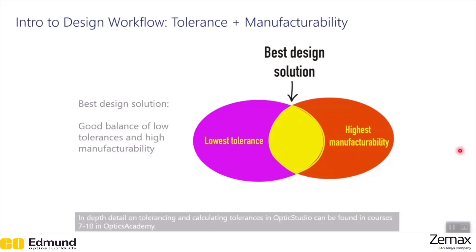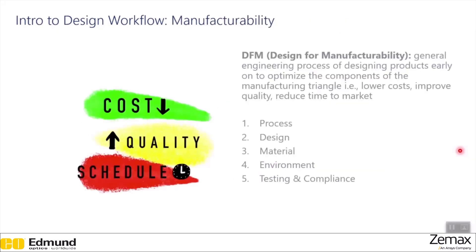In-depth detail on tolerancing and calculating tolerances can be found in courses 7–10 in Optics Academy. Design for Manufacturability, or DFM, is a general engineering process of designing products early on to optimize the components of the manufacturing triangle — lowering costs, improving quality, and reducing time to market. There are five different parts to DFM: process, design, material, environment, and testing and compliance.